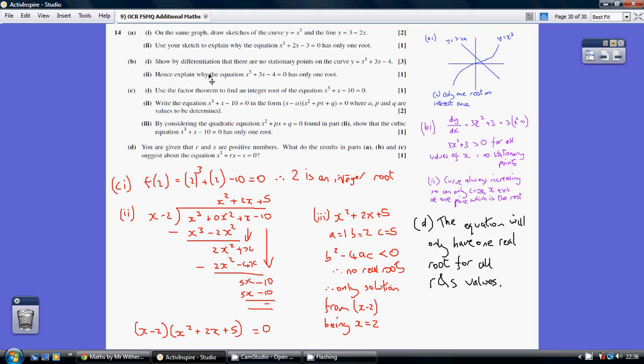Part B, hence explain why the equation has only one root. Well, the point is that your curve has always got a positive gradient, so it's always increasing. It's always increasing, so it can only ever cross the x-axis once, hence why only one root.